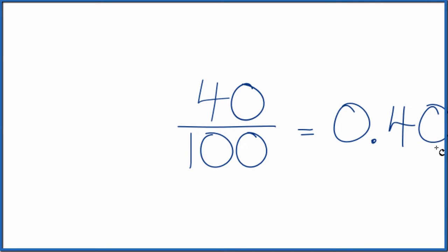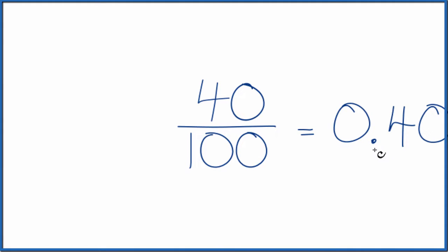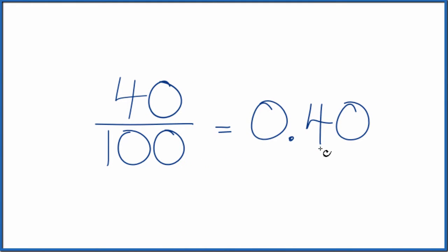Sometimes people won't write this zero here at the end. So the fraction 40 over 100, that's equal to 0.40, or you could say 0.4.